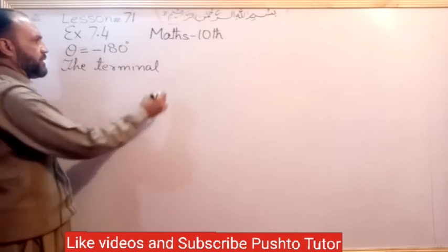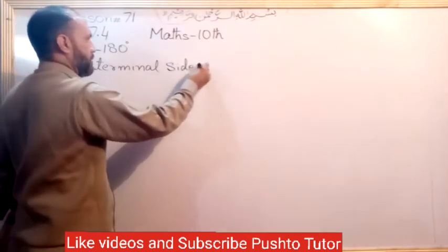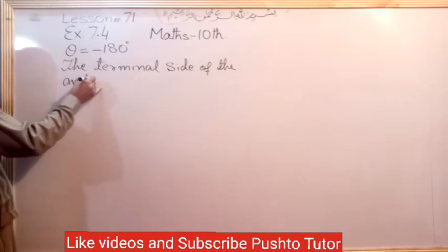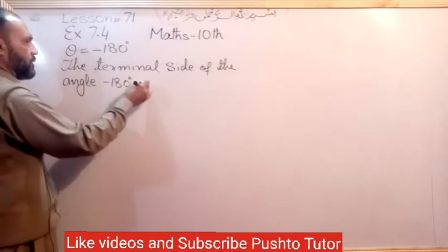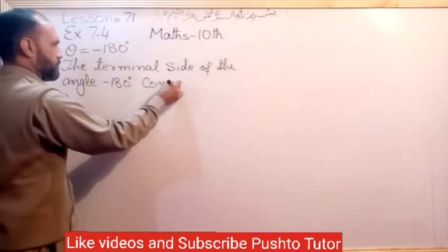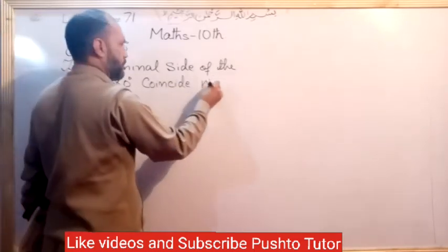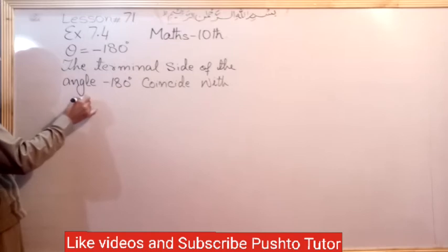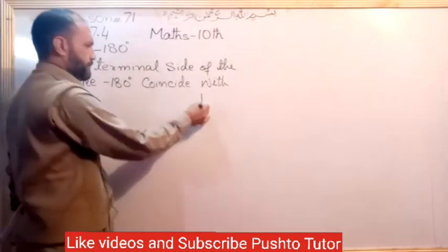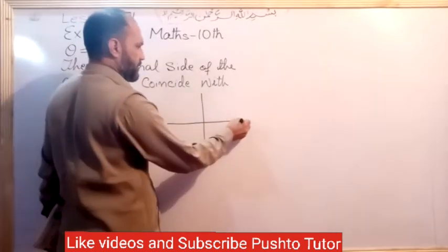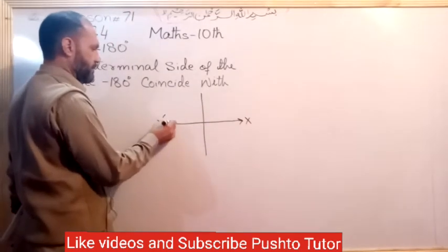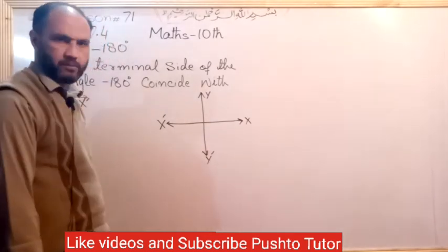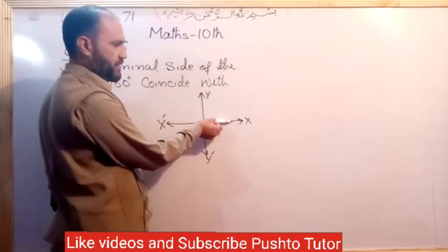The terminal side of the angle minus 180 degree coincides with OX prime. The coordinate system has x-axis, x-prime, y-axis, and y-prime.